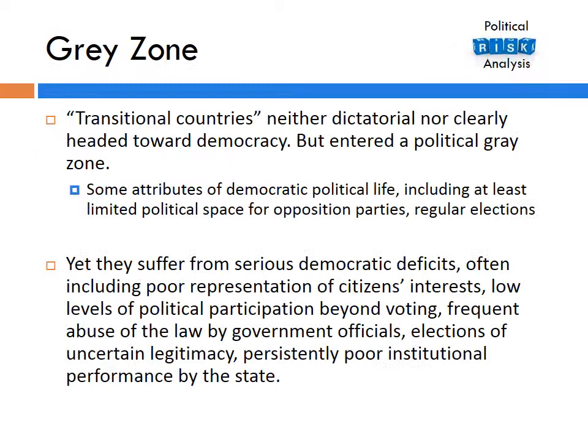First, the Grey Zone. Thomas Carruthers states that most transitional countries are neither clearly dictatorial nor clearly headed towards democracy. They enter a political grey zone where they have some attributes of democratic political life, including at least limited political space for opposition parties and regular elections. However, they suffer from serious democratic deficits, often including poor representation of citizens' interests, low levels of political participation beyond voting, frequent abuse of the law by government officials, elections of uncertain legitimacy, and persistently poor institutional performance by the state.